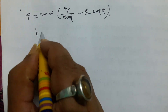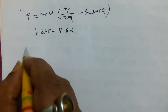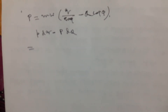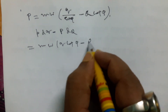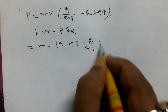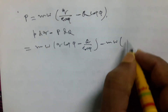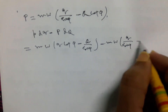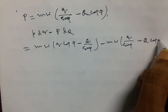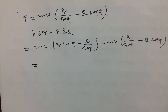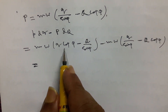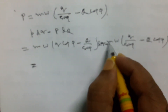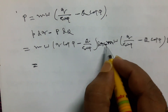Now we calculate p dq minus capital P dQ. Substituting the value of small p as mω Q cot φ minus Q/sin φ, and capital P as mω q/sin φ minus Q cot φ, we identify terms in dq and terms in dQ and arrange them into a perfect differential format.